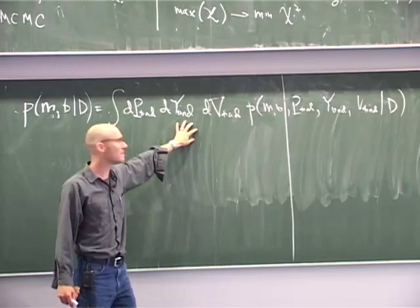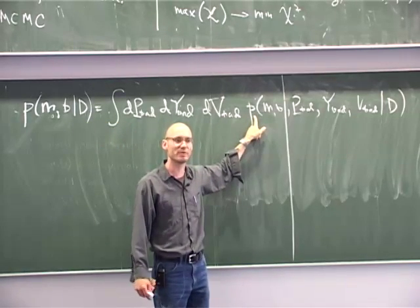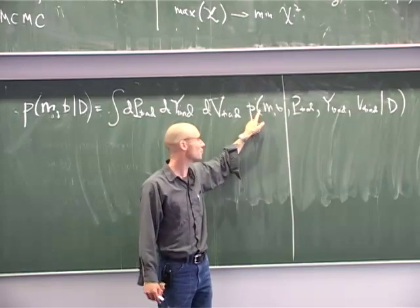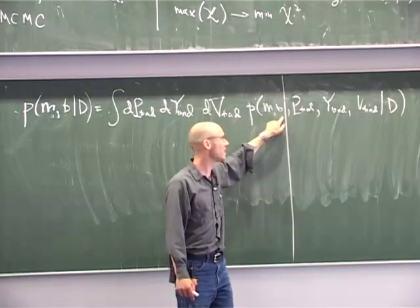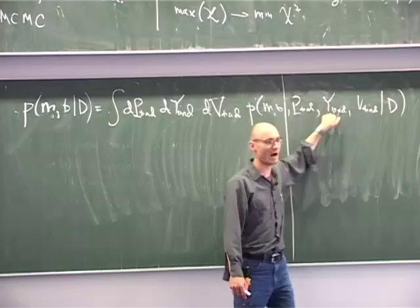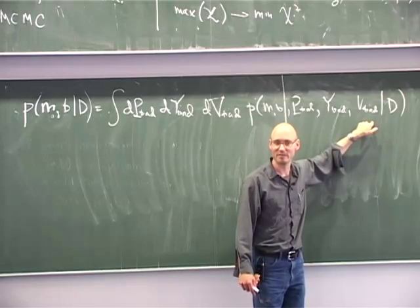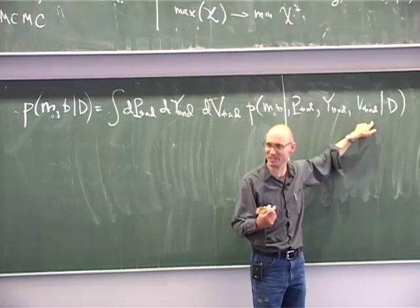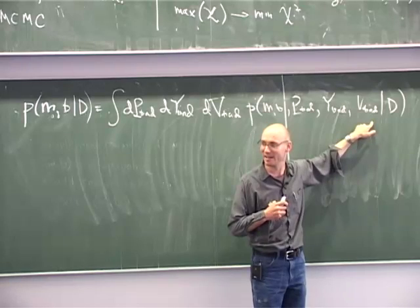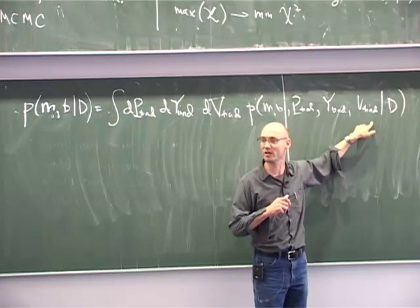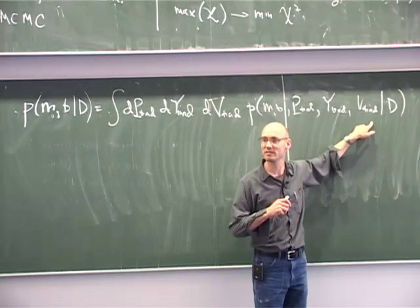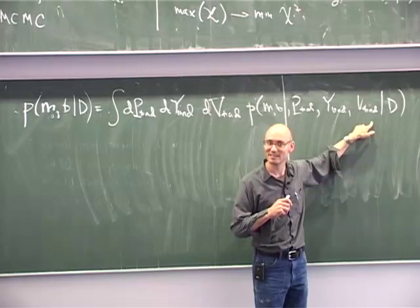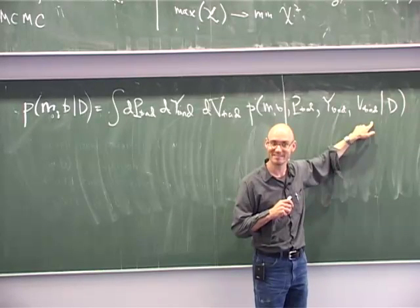Why? Because this function has what units? It has units 1 over M, 1 over B, 1 over P, 1 over Y, 1 over V. Right, it's a probability distribution function. It integrates to unity. That means its units are 1 over the integrand. Right? Nodding? Please nod. Thank you.